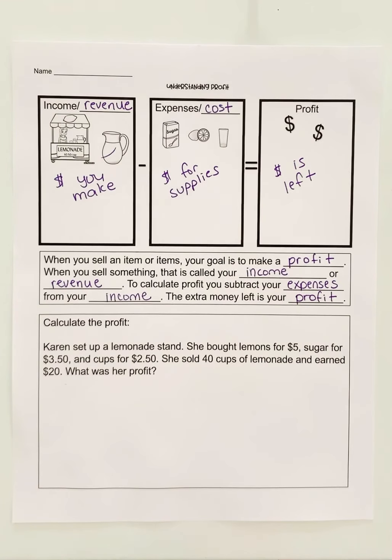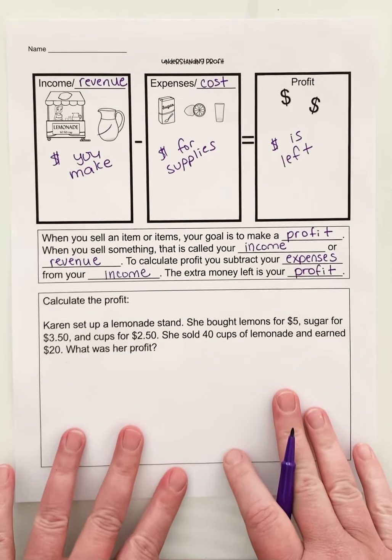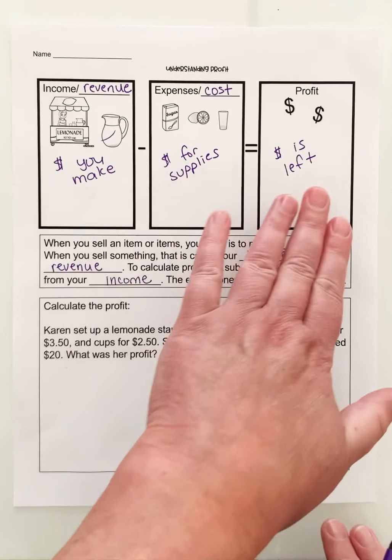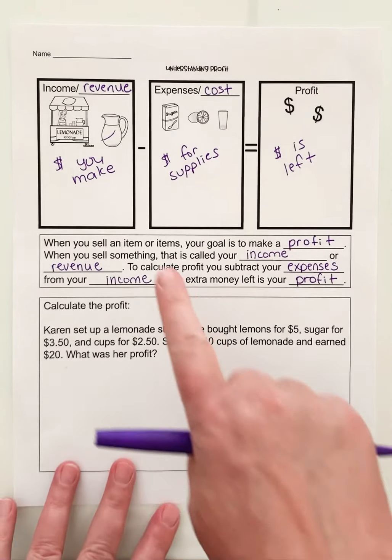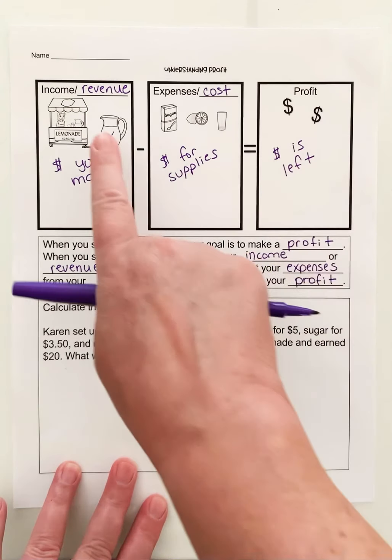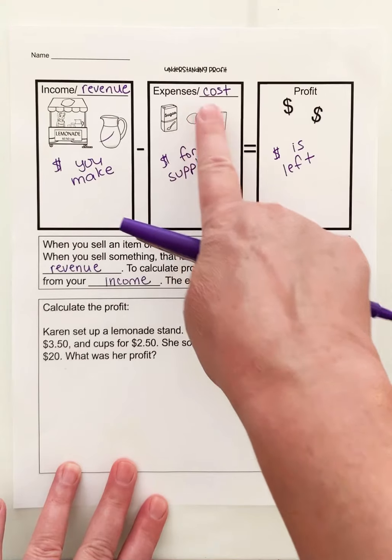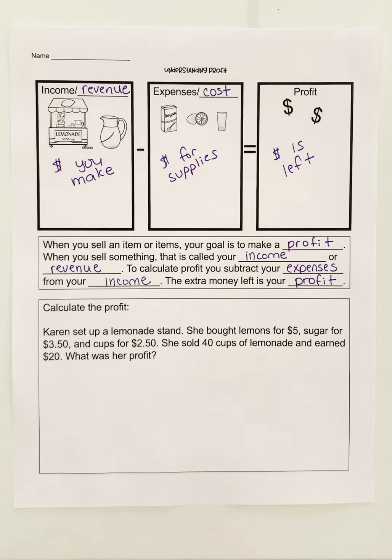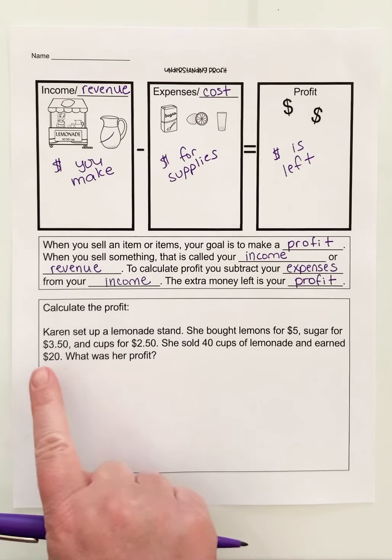So I'm going to walk you through three scenarios where we're going to look at our problem, we're going to look at the parts, we're going to figure out what our revenue is, what our cost is, and we're going to calculate our profit. Now, we're going to refer to this as we work out these problems. Your income minus your expenses equals your profit. So let's get started.